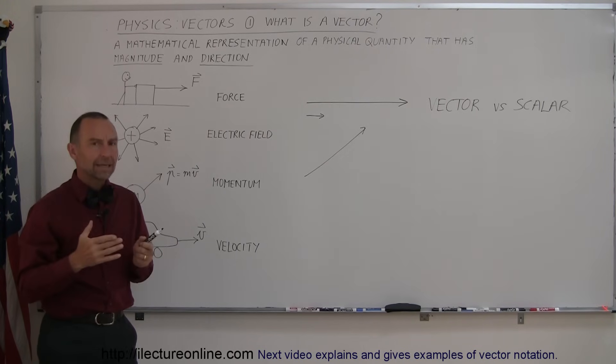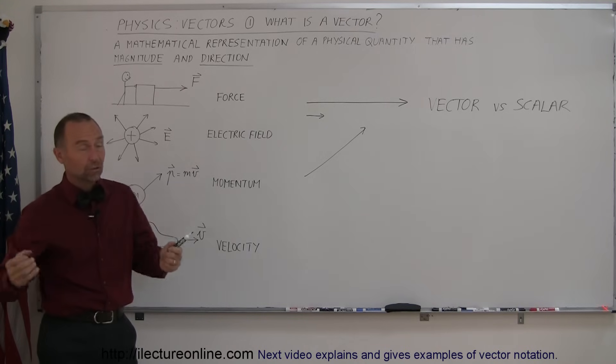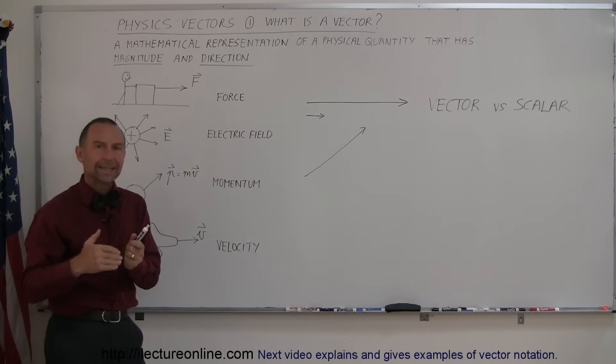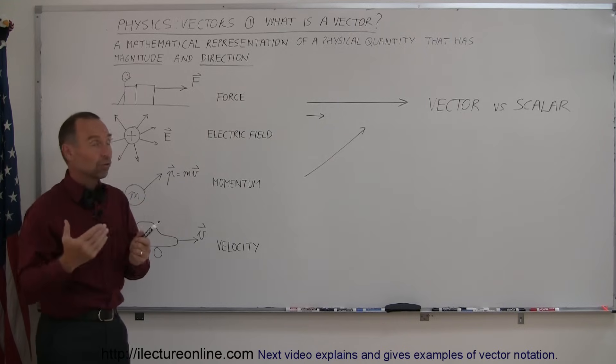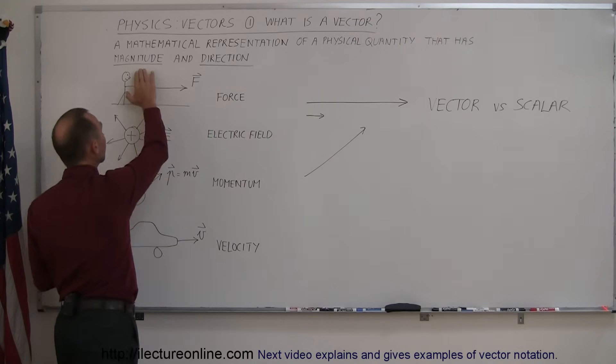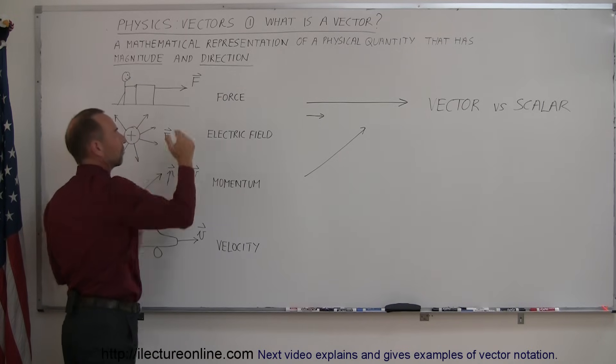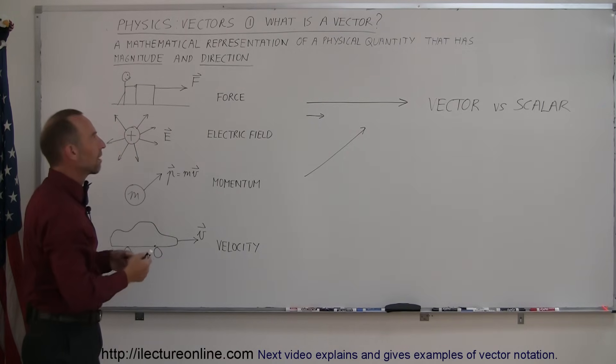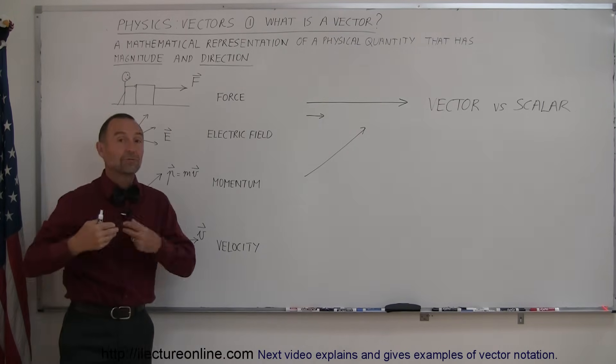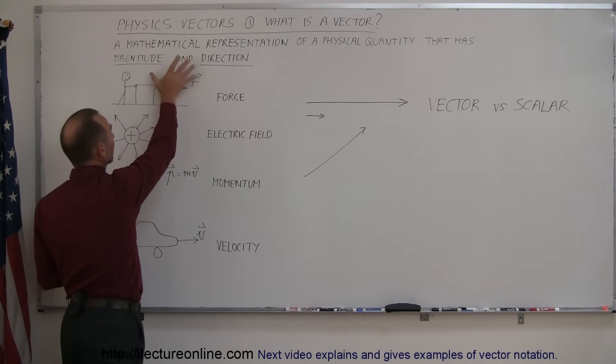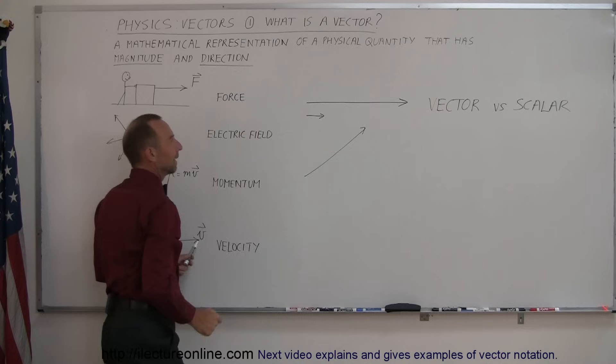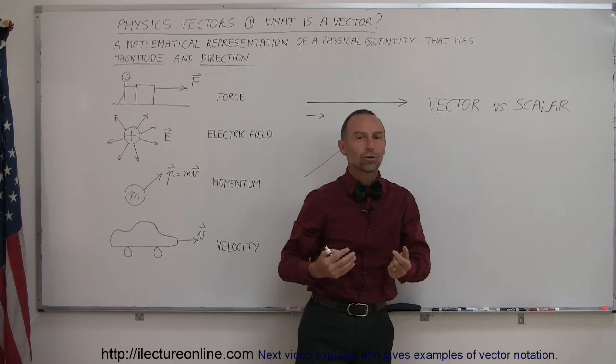But, a velocity can be fast or slow, so it has magnitude, it can also have direction that makes it a vector. So, a vector is a quantity that both must be expressed in terms of how large it is, magnitude, and in what direction it is. Either what direction an object is traveling, or the direction that the force is being exerted, and so forth. So, that's the difference between a vector quantity, which has both magnitude and direction, and a scalar quantity, which only has magnitude.